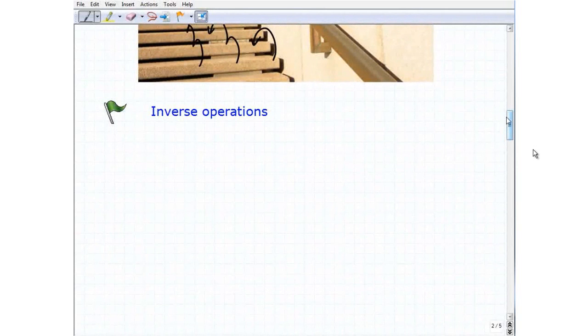So what's an inverse operation? Well, let's say I have this number 6. I'm just kind of making up a number here. So I have this number 6, and I go, you know what? I'm going to add 2 to it. I'm going to perform an operation, an addition operation. So I'm going to add 2 to my 6.